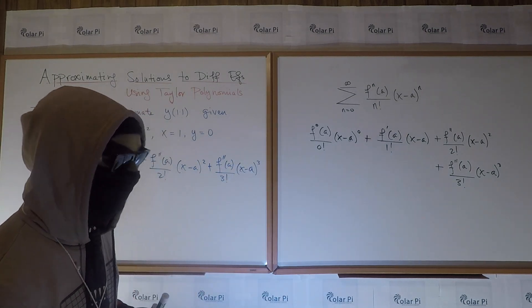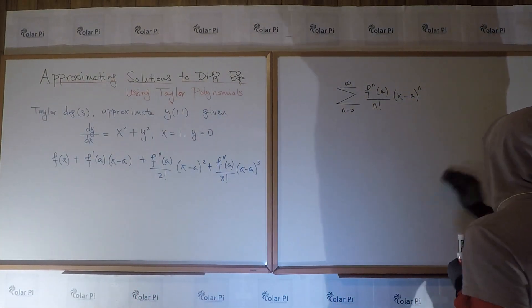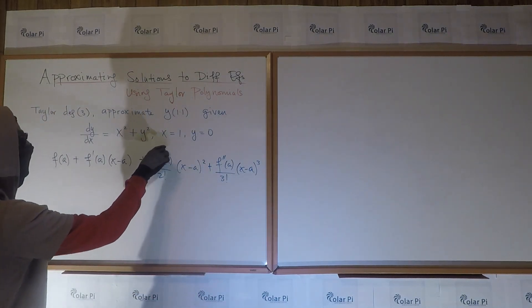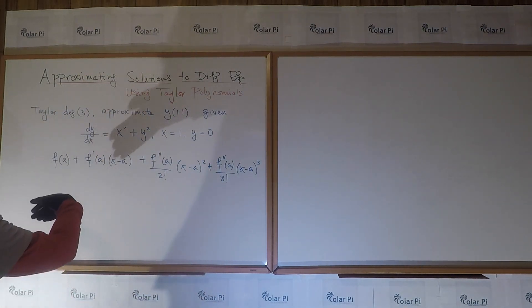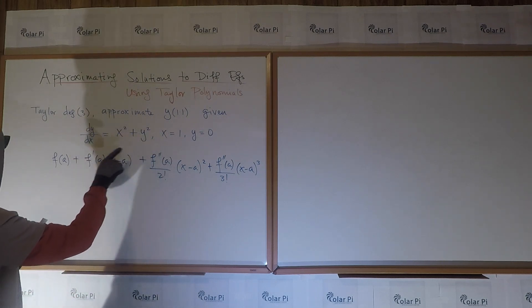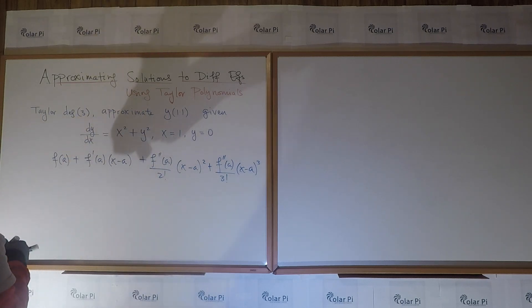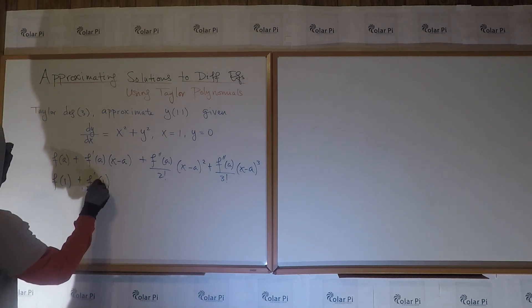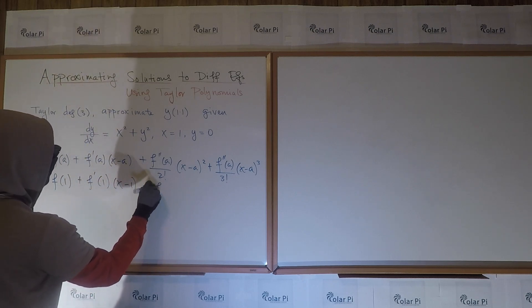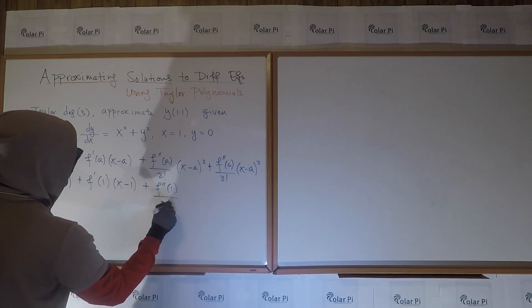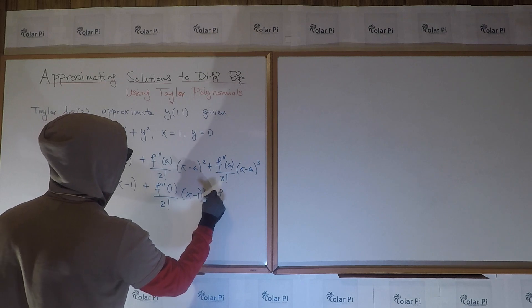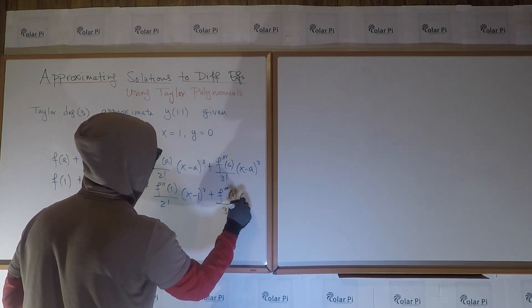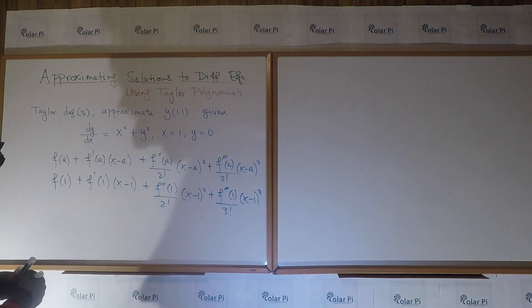So we start with f(a) plus we have f'(a) times x minus a over 1 factorial is just that. And then plus f''(a) over 2 factorial times x minus a squared plus f'''(a) over 3 factorial, x minus a to the 3rd. Okay, cool. Oh, my eraser is right here. Alright, and I don't need this either anymore. Okay. Alright, and so here, a is 1.